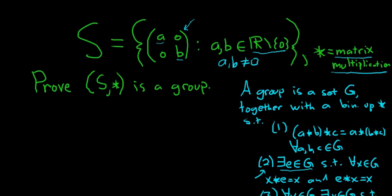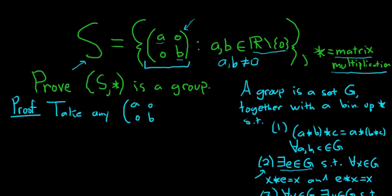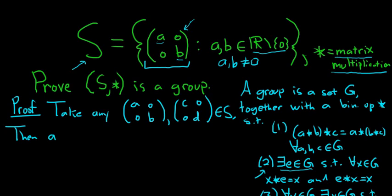Before we do anything, we have to prove that matrix multiplication is indeed a binary operation on S. Given any two matrices in S, the product also has to be in S. So take any two elements in S: [A, 0; 0, B] and [C, 0; 0, D]. This means A, B, C, and D are all non-zero.